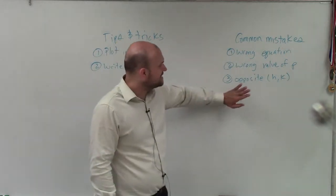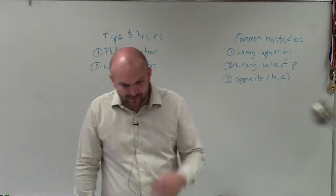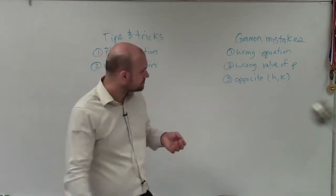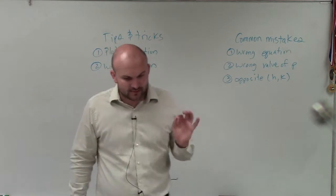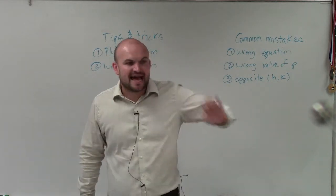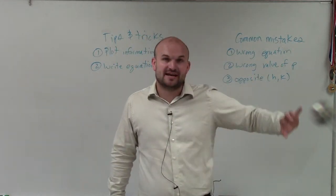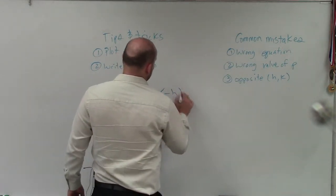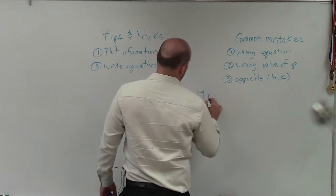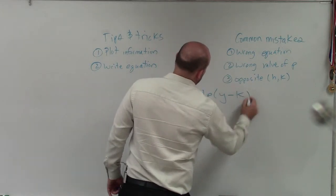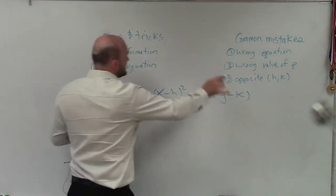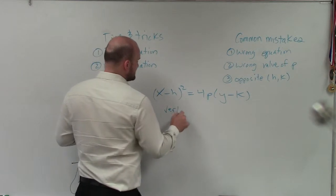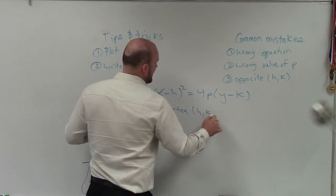And the last thing is opposite of h and k. Remember, ladies and gentlemen, when we're dealing with h and k, remember it's x minus - opposite of h, right? There's two formulas. I'll just do one: x opposite of h squared equals 4p y opposite of k. Opposite of h, opposite of k. The vertex is just h, comma k.